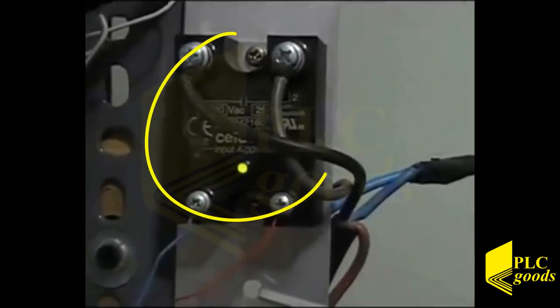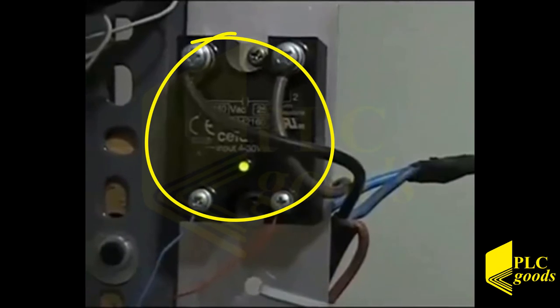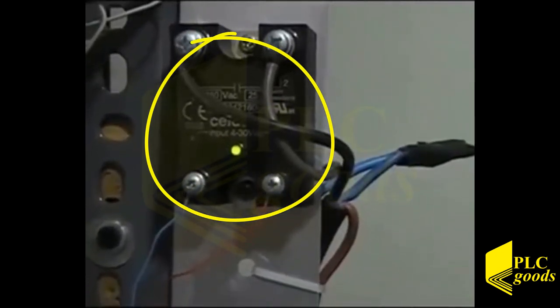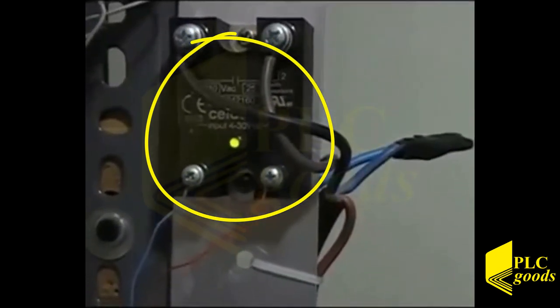SV is greater than PV and their difference is 3 degrees Celsius, so SSR1 and also the red LED indicator are turned on to heat the water.